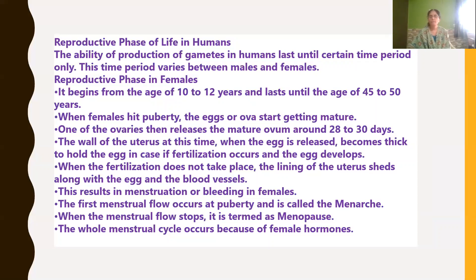When the menstrual flow stops at the age of 45 to 50 years, it is called menopause. The reproductive life of a woman lasts from menarche to menopause. The entire menstrual cycle occurs because of the female hormone estrogen.